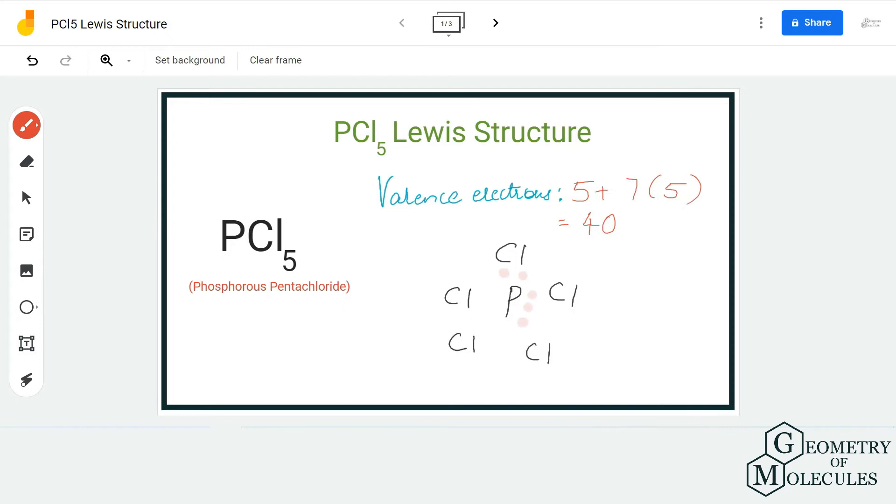the chlorine and phosphorus atoms to show a bond. Each bond takes up two valence electrons, so we use 10 out of 40 valence electrons to form these five single bonds. Once you have done that, we are left with 30 more valence electrons. As you can see, chlorine atoms